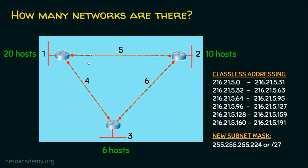However, for networks 4, 5, and 6, we only need 2 IP addresses but we are getting 32, wasting 30 IP addresses each. For network 2, which needs 10 hosts, we still get 32 — wasting 22. For network 3 with only 6 hosts, out of 32 addresses, 2 are unusable and 24 are wasted. So with fixed length subnet masking, there is still significant wastage.